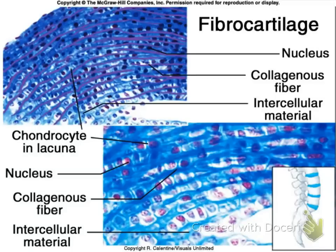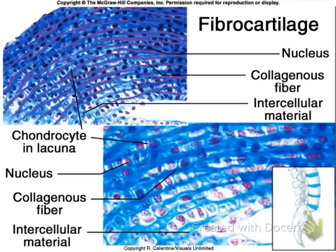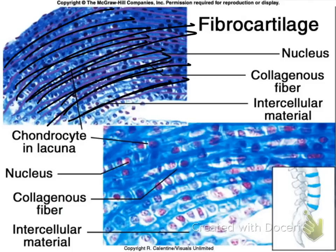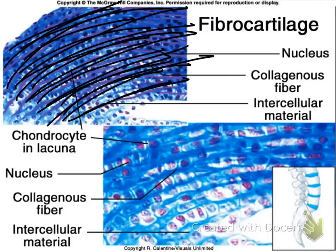Just like the other two cartilages, fibrocartilage also contains chondrocytes — these dark structures are your chondrocytes in lacunae. But unlike the other two, all of these parallel lines are your collagen fibers. Fibrocartilage is completely covered in collagen fibers, and that's what separates it from the other two types of cartilage.